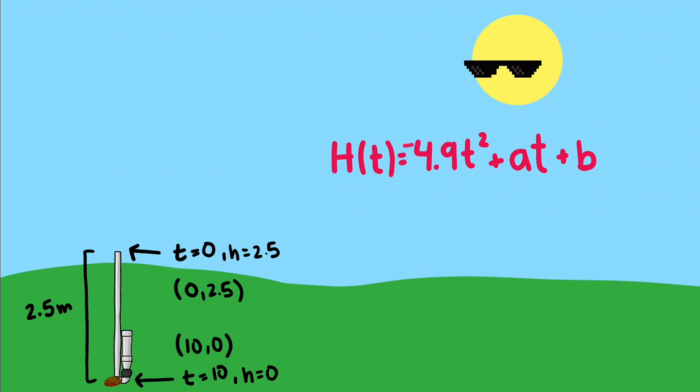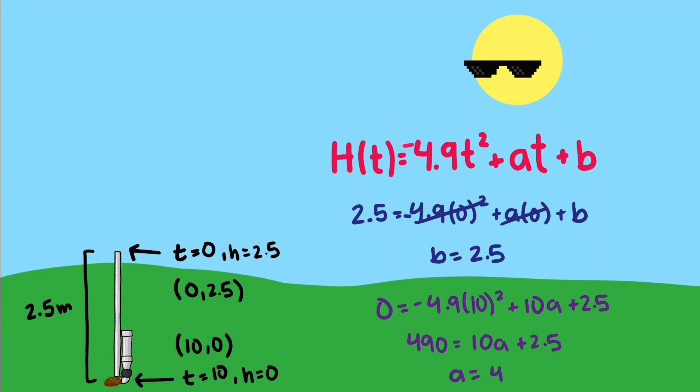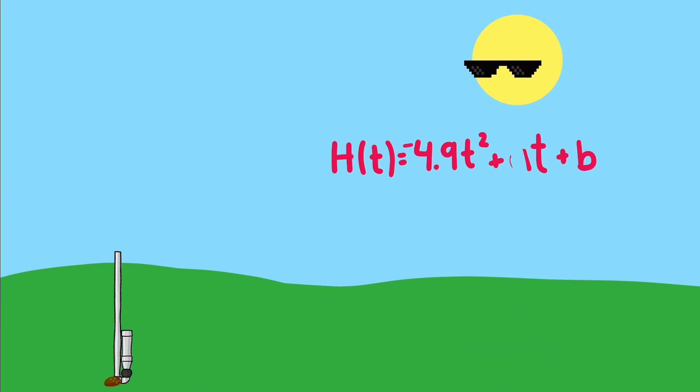Using the first point, zero comma two point five, means when time equals zero, h equals two point five. Plugging those values in gives us that b equals two point five. Using the second point, ten comma zero, takes a little more work, but we find that a is equal to forty eight point seven five. Now we have an equation that tells us the height of the potato for any time t, for values of t between t equals zero and t equals ten.